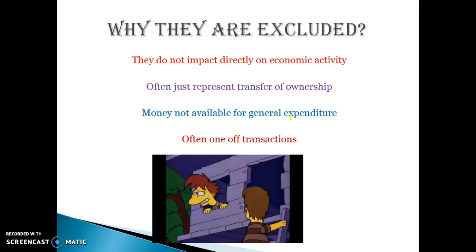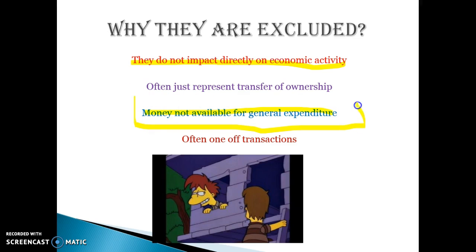Why are these one-off transactions excluded? Basically, they don't directly impact on economic activity, they often are just one-off transactions, or they represent the transfer of ownership — the government selling or buying assets. So it's not really a sign of the strength of the economy, and it's not money that will be available for general expenditure. A lot of the money in the future fund is designed for the future, so we can't spend it to stimulate the economy right now.